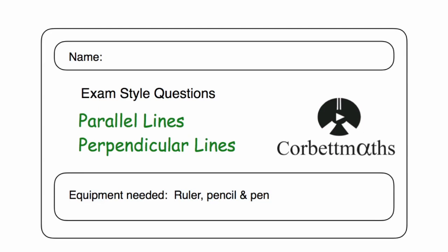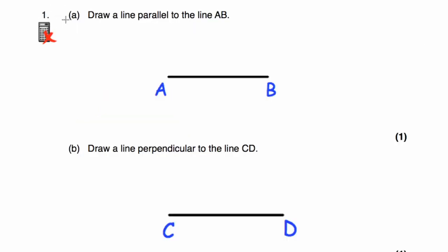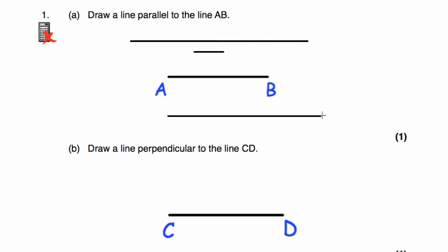Question number one A: we've been asked to draw a line that's parallel to the line AB. A parallel line is a line that will never meet or cross the line AB, so it's going to have to be horizontal as well. It could be a longer line, a shorter line, above the line or below the line — as long as it's not going to meet the line AB, that's fine.